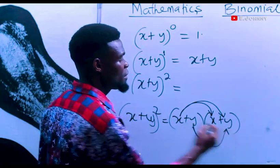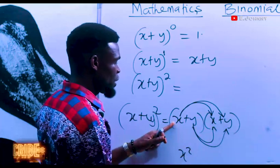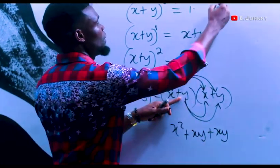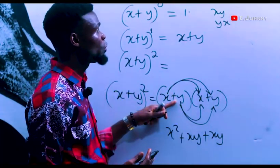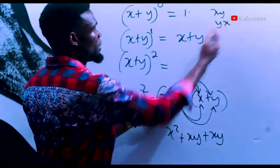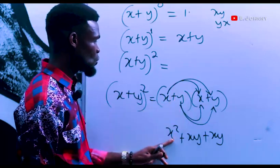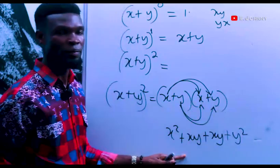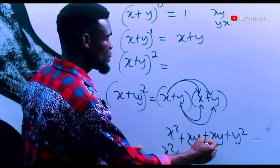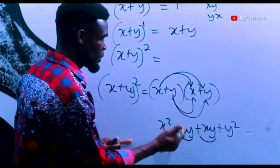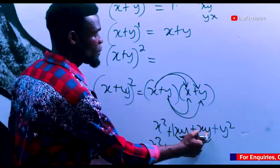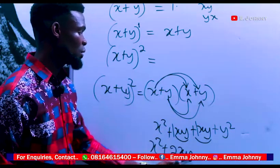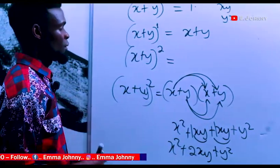So let's go: x times x is x squared, plus x times y is xy, plus y times x is xy. Please note that xy and yx are the same — in mathematics we follow alphabetical order, so xy is the best way, though yx is still correct. So x times x is x squared, x times y is xy, y times x is xy, plus y times y is y squared. Then we have x squared plus xy plus xy. Since xy plus xy are the same, the coefficient of each is one, so one plus one gives two xy. Therefore x squared plus two xy plus y squared.